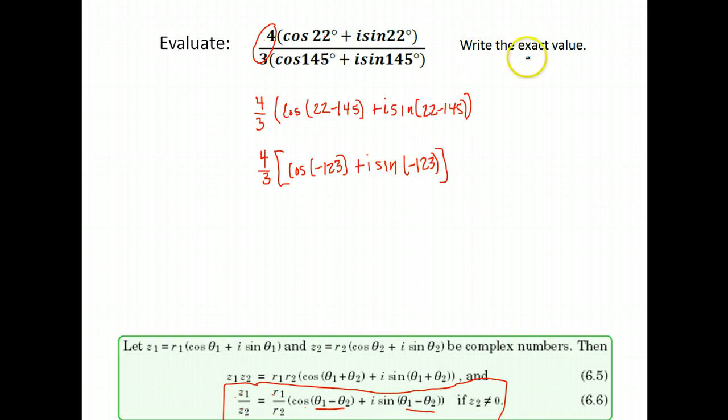It wants us to write the exact value. 123 is not one of our angles that we have an exact value for, so rather than using my calculator and calculating the value, I'm just going to leave it like this. So I will have 4/3 cosine negative 123 plus i sine negative 123.